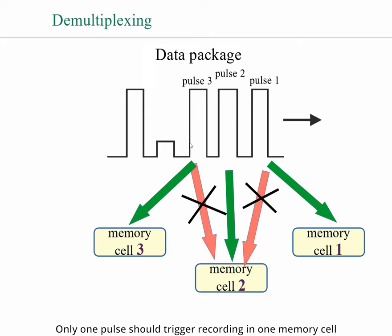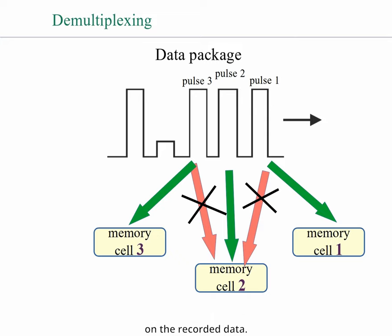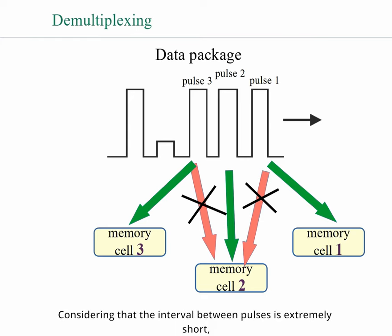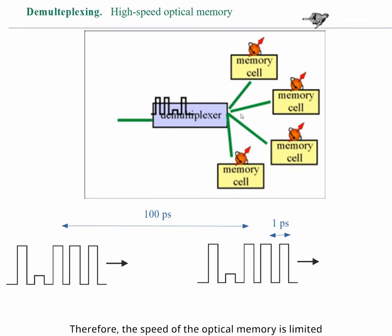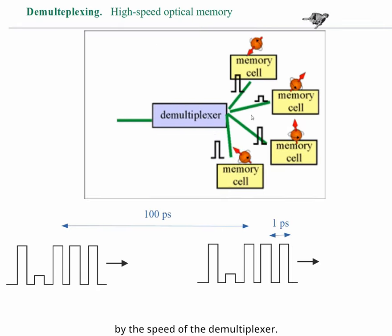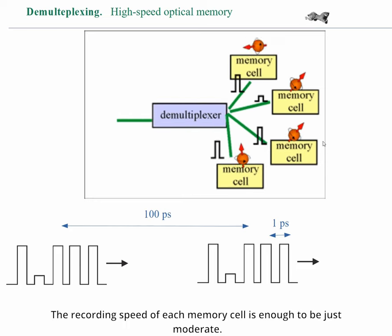Only one pulse should trigger recording in one memory cell. It is critically important that neither the preceding nor the following pulse should have any influence on the recording data. Considering the interval between pulses is extremely short, it is not a simple task. Therefore, the speed of optical memory is limited by the speed of the demultiplexer. The recording speed of each memory cell needs to be just moderate.